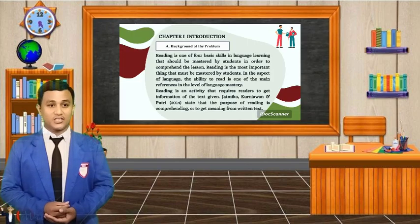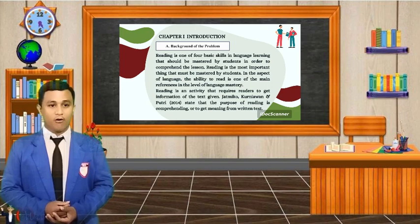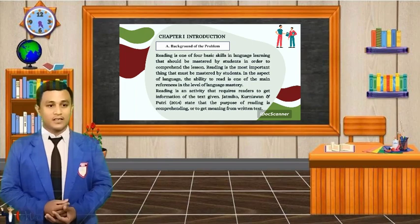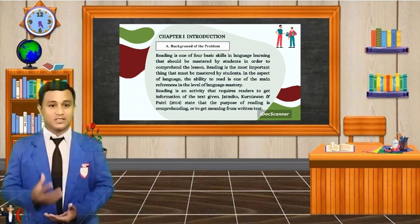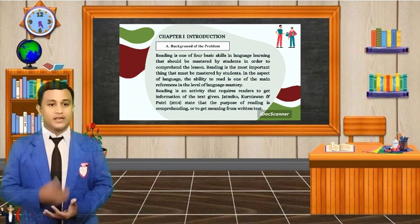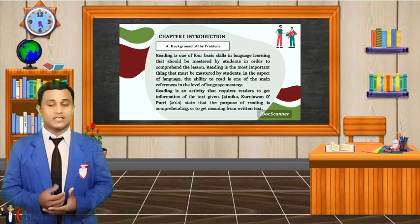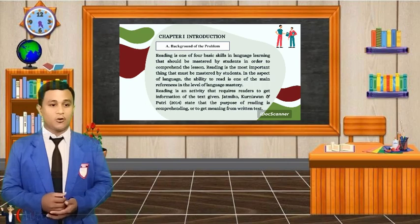Chapter 1, Introduction. Part A, The Background of the Problems. Reading is one of four skills in English that must be mastered by students in order to comprehend the lesson. Reading is the most important thing that must be mastered by students. In the aspect of reading, theory is one of the main elements in reading mastery. Reading is an activity to get information from a text. Uninko, Turniawan, and Putri say that the purpose of reading is comprehending or giving meaning from written text.